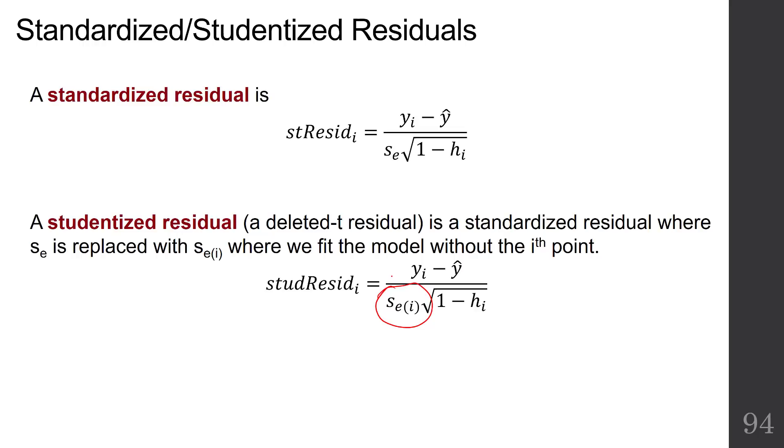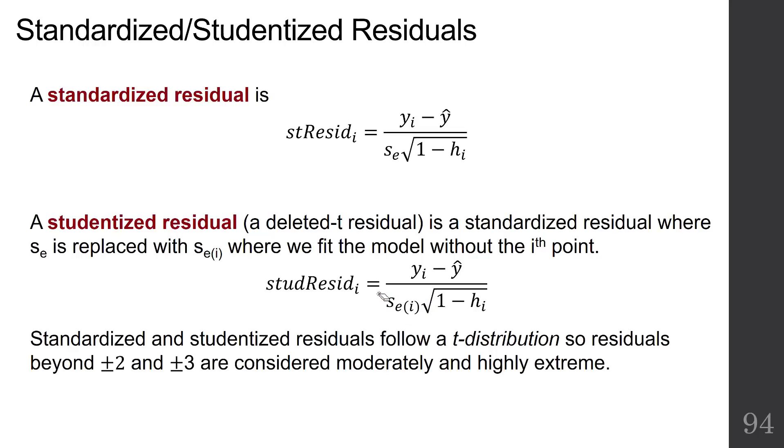If you're saying, I think this point might be extreme, you want to compare it against the standard error of all the other points in the regression. If you think that one's extreme, it might change that standard error. So we have a studentized and a regular old standardized residual, and these follow the t-distribution. Residuals beyond 2 and 3 standard deviations are considered moderately and highly extreme respectively.